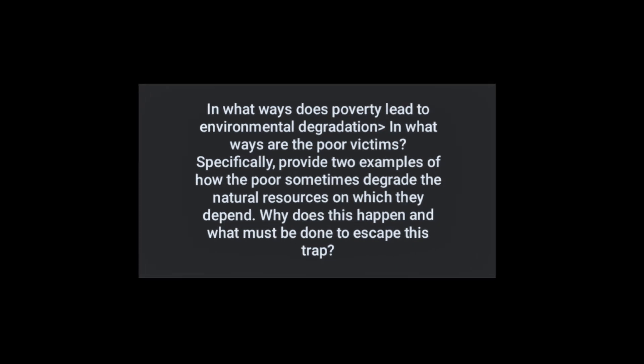In what ways does poverty lead to environmental degradation, and in what ways are the poor its victims? Provide two examples of how the poor sometimes degrade the natural resources on which they depend, why this happens, and what must be done to escape this trap. The primary and most important sustainable development goal is to end poverty in all its manifestations everywhere. Every nation looks forward to ending poverty so that even the most vulnerable and underprivileged people have equitable access to economic resources, wholesome living conditions, and essential infrastructure and technology. There should be no question that the impoverished are more severely vulnerable than the rich to the effects of environmental devastation.